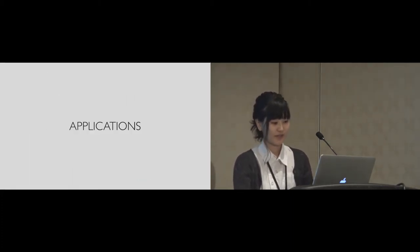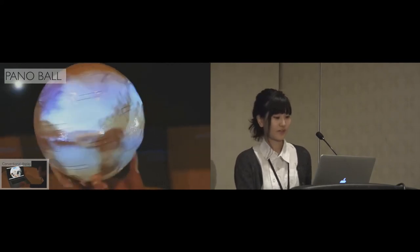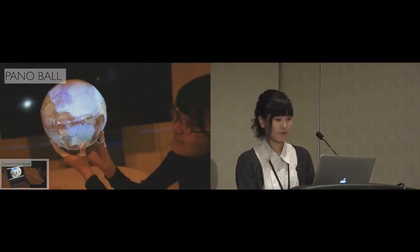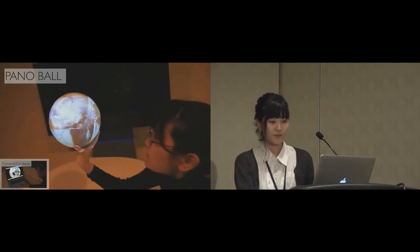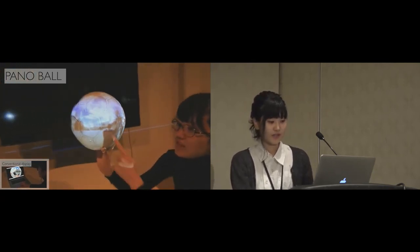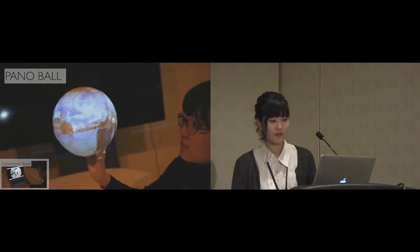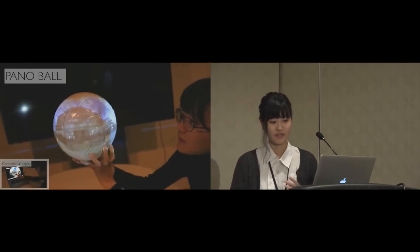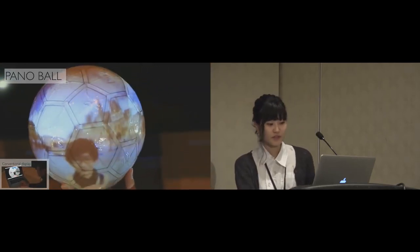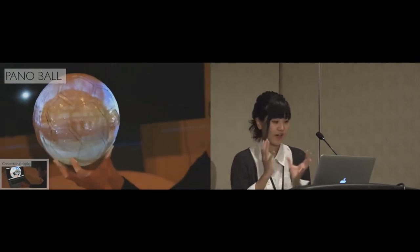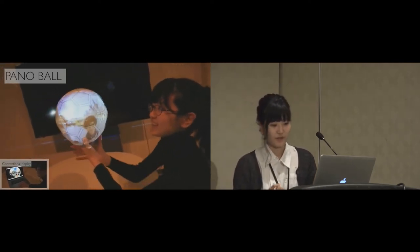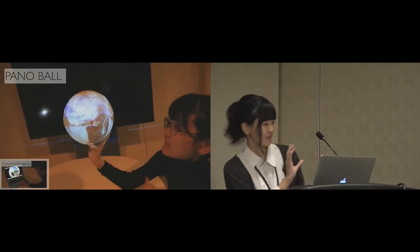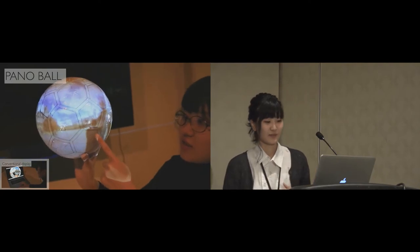Next, let me show some application examples to show how a ball display can be used. First, we implemented the omnidirectional image viewer named Panabal. Spherical images can be browsed more naturally by displaying on the sphere. For example, in the conventional flat display, users drag the image to select the point of view and often fall into disorder of position relationship in that kind of picture. With the proposed system, by rotating the device with their hands, they can see the image from their favorite angle. At the same time, by changing the point of view with their body moving around the sphere like this, it is easy to search and browse the position they want to see.